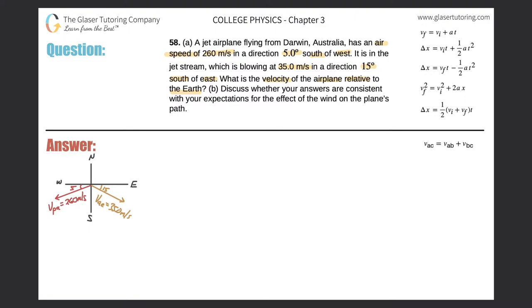First, the 260 meters per second air speed of the jet — what is that velocity relative to? Well, it says air speed, so this is the velocity relative to the air. Take a look at my diagram: on the left-hand side I have the velocity of the plane relative to the air, with a velocity of 260 meters per second, and they told me it was five degrees south of west.